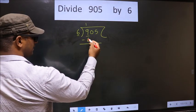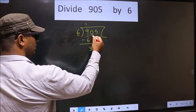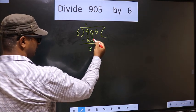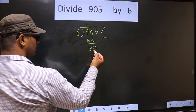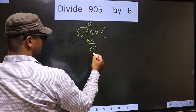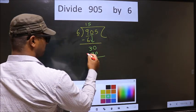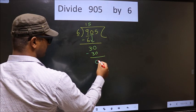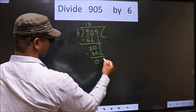Now subtract 9 minus 6 equals 3. Now bring down the beside number, that is 0. So here we have 30. When do we get 30 in the 6 table? 6 times 5 is 30. Now subtract 30 minus 30 is 0. Now bring down the beside number, that is 5.